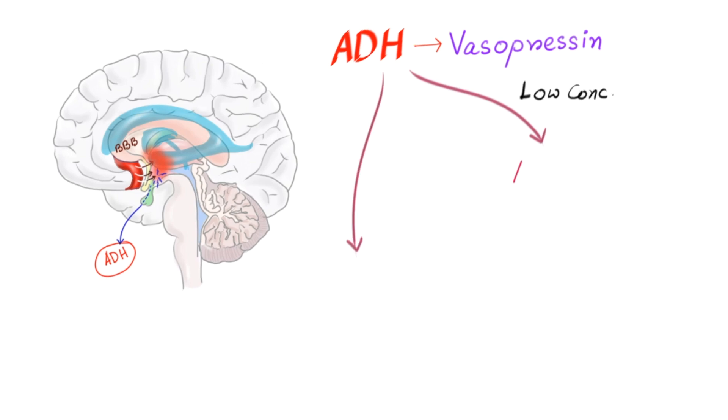But to produce antidiuresis small amount of ADH is enough, whereas for vasoconstriction it needs more amount or larger amount of ADH. So in low concentration it acts as an antidiuretic hormone and in high concentration it acts as a vasoconstrictor.